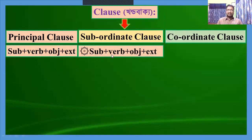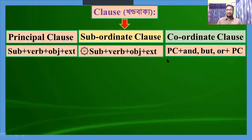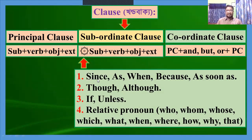Subordinate clause: it has subject, verb, object, and extension, but before the subject there is a subordinating word. In a subordinate clause, before the subject we find words like: since, as, when, because, as soon as, though, although, if, unless, and relative pronouns — who, whom, whose, which, what, when, where, how, why, that — etc. In a principal clause, nothing sits before the subject.